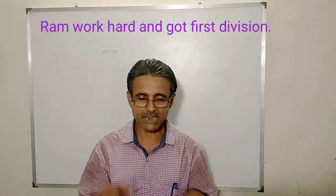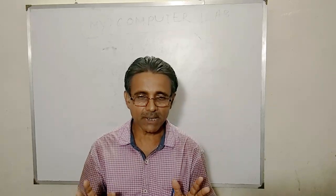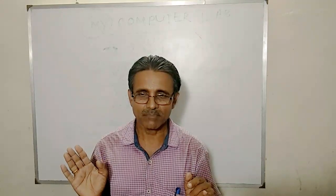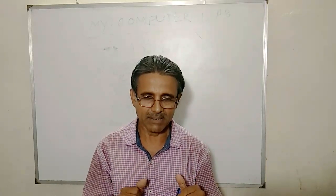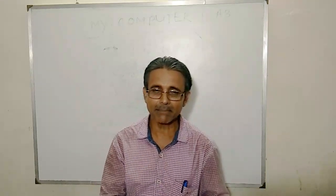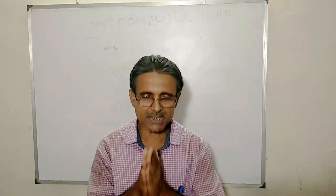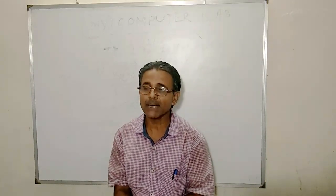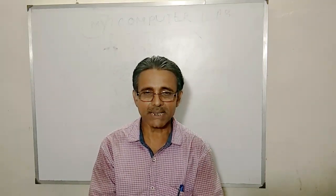When two independent clauses are joined together by a coordinator or coordinating conjunction, it will be called a compound sentence. In the second example, 'Sita cannot speak English but she can speak Hindi,' the conjunction is 'but,' and in the first example the conjunction is 'and.' Both 'and' and 'but' are coordinators because they make a coordination between two sentences. So it is called a compound sentence.